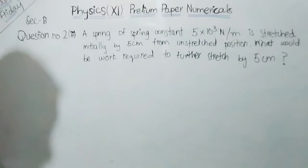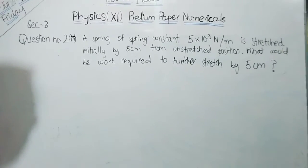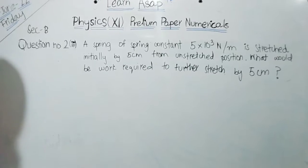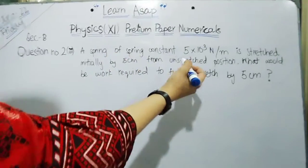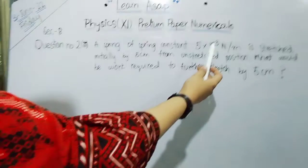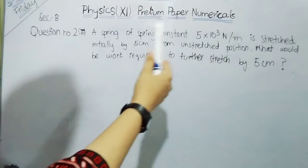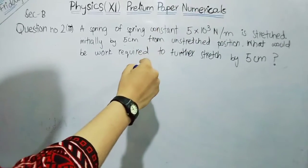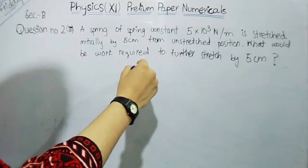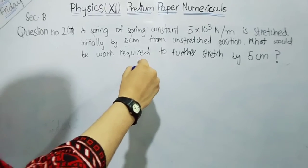Assalamu alaikum everyone, here we are back again with another demonstration from the premium paper numericals of physics. This is question number 2, part 3: A spring of spring constant 5×10³ N/m is stretched initially by 5 centimeter from unstretched position.